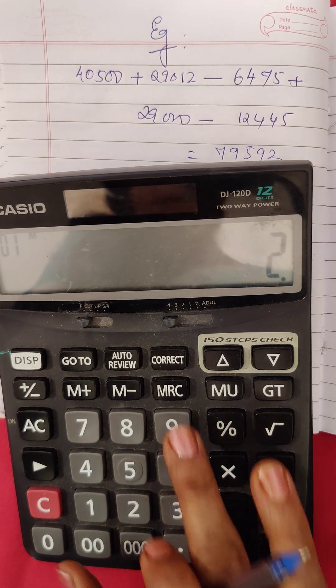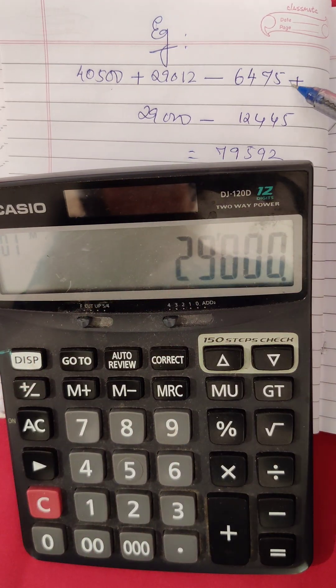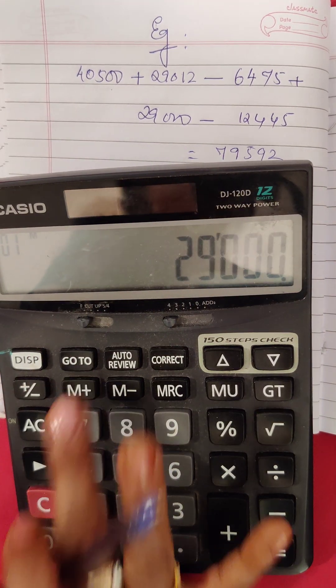Then comes 29,000, which again has to be added up. So you will put it in memory plus.